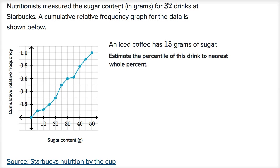Nutritionists measured the sugar content in grams for 32 drinks at Starbucks. A cumulative relative frequency graph for the data is shown below. On the horizontal axis we have different amounts of sugar in grams, and then on the vertical axis we have the cumulative relative frequency.